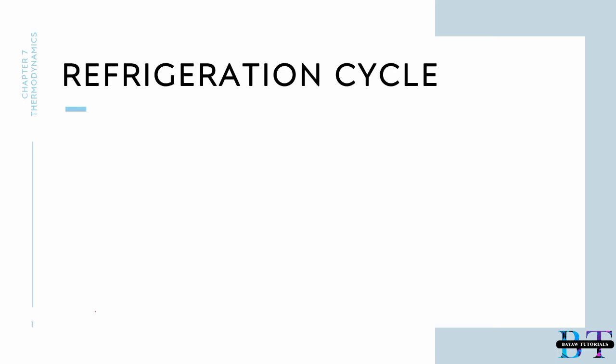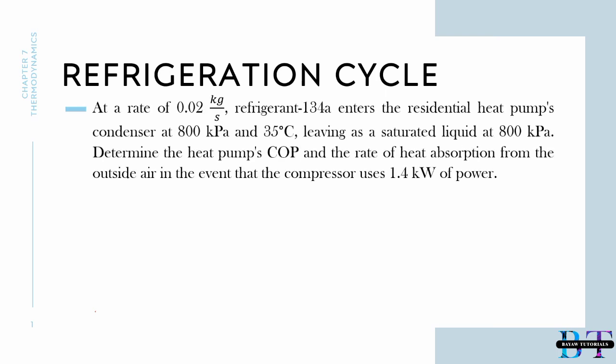Today we have our chapter 7 in thermodynamics, the refrigeration cycle. Now let's have our question. At a rate of 0.02 kilograms per second, refrigerant-134a enters the residential heat pump's condenser at 800 kilopascals and 35 degrees Celsius, leaving as a saturated liquid at 800 kilopascals. Determine the heat pump's COP and the rate of heat absorption from the outside air in the event that the compressor uses 1.4 kilowatts of power.